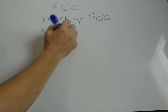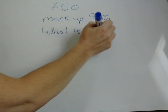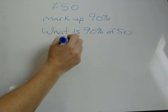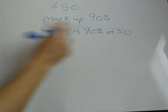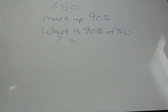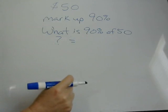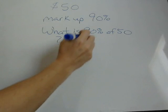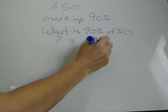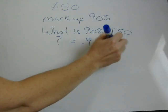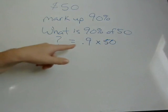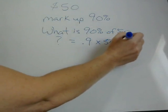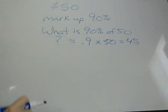To find this out, you ask yourself: what is 90% of $50? What is what we're trying to figure out. 'Is' means equals. 90% — you can't multiply percentages, you can only multiply decimals, so you need to change 90% into a decimal. So this is going to be .9 times 50. To find the markup, you take 90% times 50, or .9 times 50, and that turns out to be 45. So that's how much it's going to be marked up.